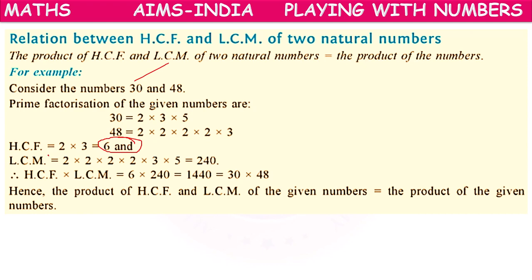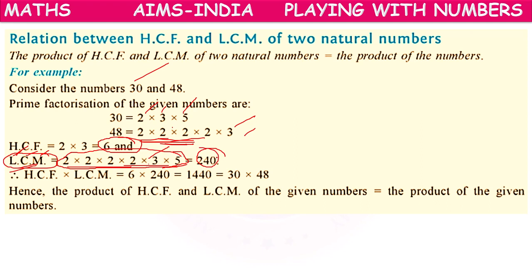In the same way, for LCM — least common multiple — the opposite of least is greatest. While calculating LCM, we consider the prime factor occurring the greatest number of times. Here: 2 appears 1 time in 30 and 4 times in 48 — greatest is 4 times. 3 appears 1 time in each — greatest is 1 time. 5 appears 1 time in 30 and 0 times in 48 — greatest is 1 time. We write all factors the greatest number of times and multiply them, giving us 240, which is the LCM of 30 and 48.